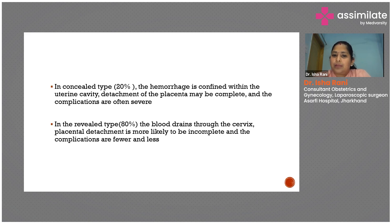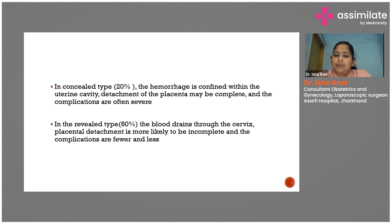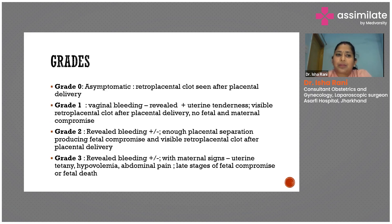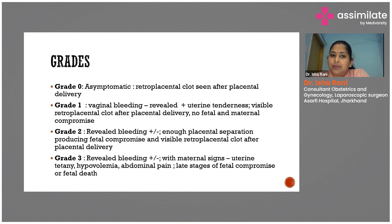In the revealed type, blood drains through the cervix and placental detachment is more likely to be incomplete. In the revealed type, complications are fewer. Now, regarding grades — there are four grades in which placental abruption can be classified.